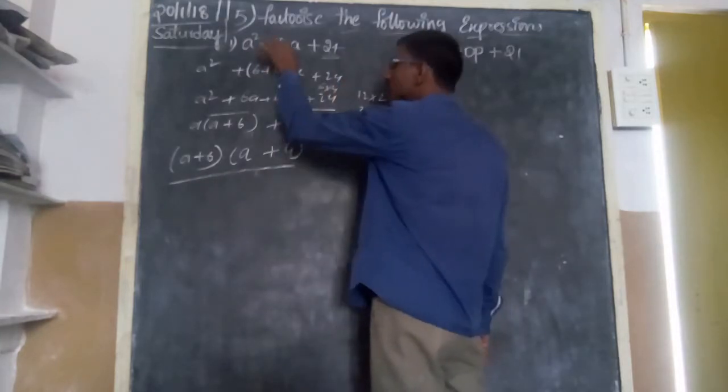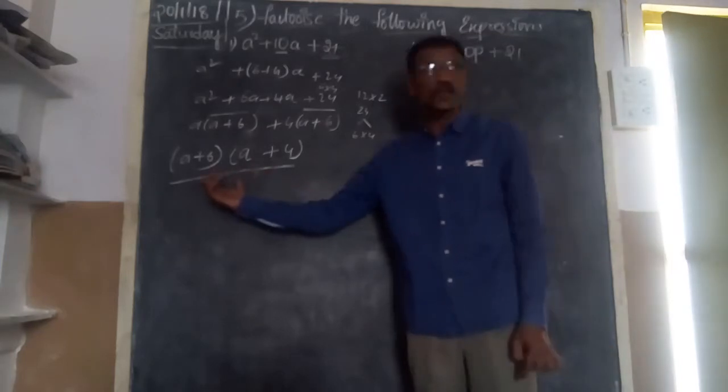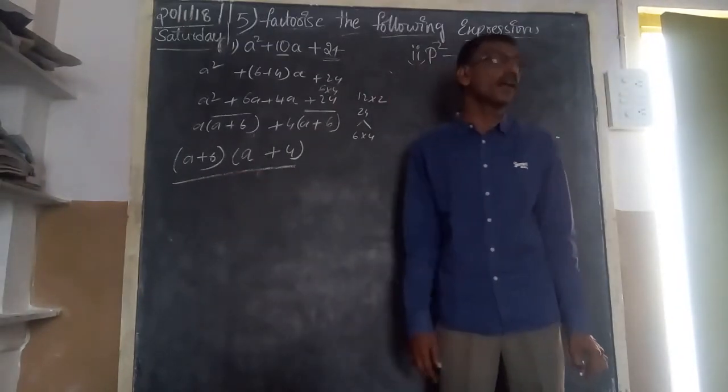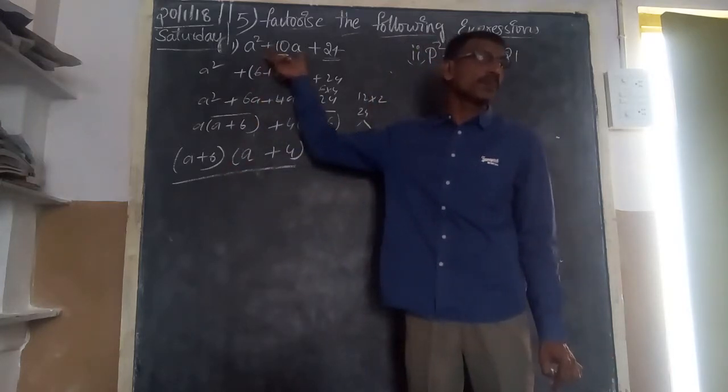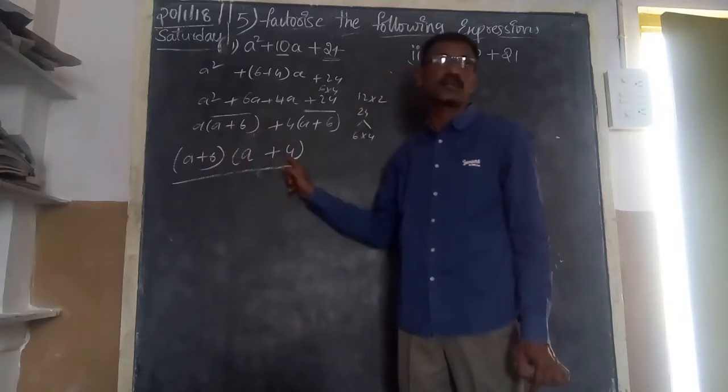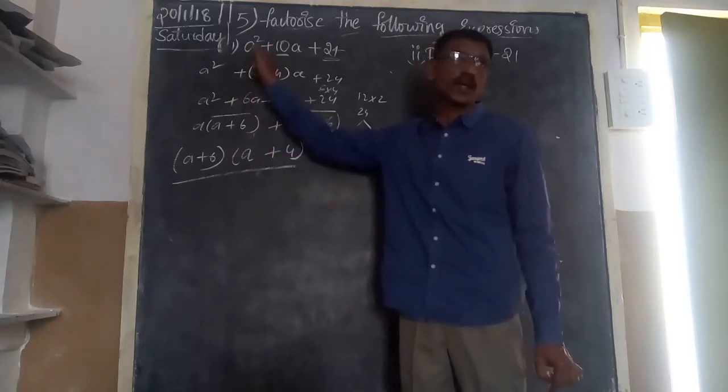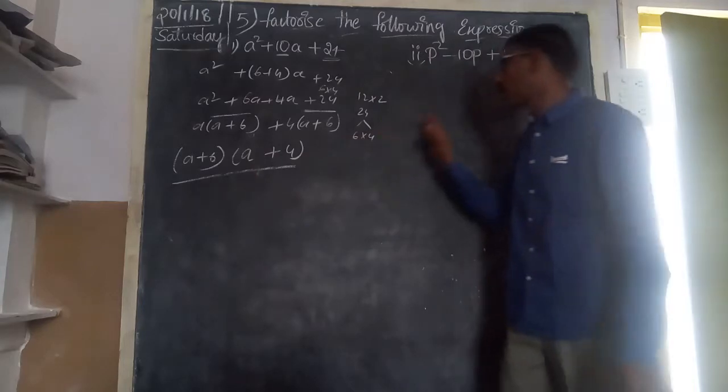Now I'll back-trace this one. Here you have two binomials. The product must be equal to this one only. By simplifying this one: first term into first term, first term into second term, second term into first term, and second term into second term. By simplifying this, we get this one only. This is the way to back-trace.